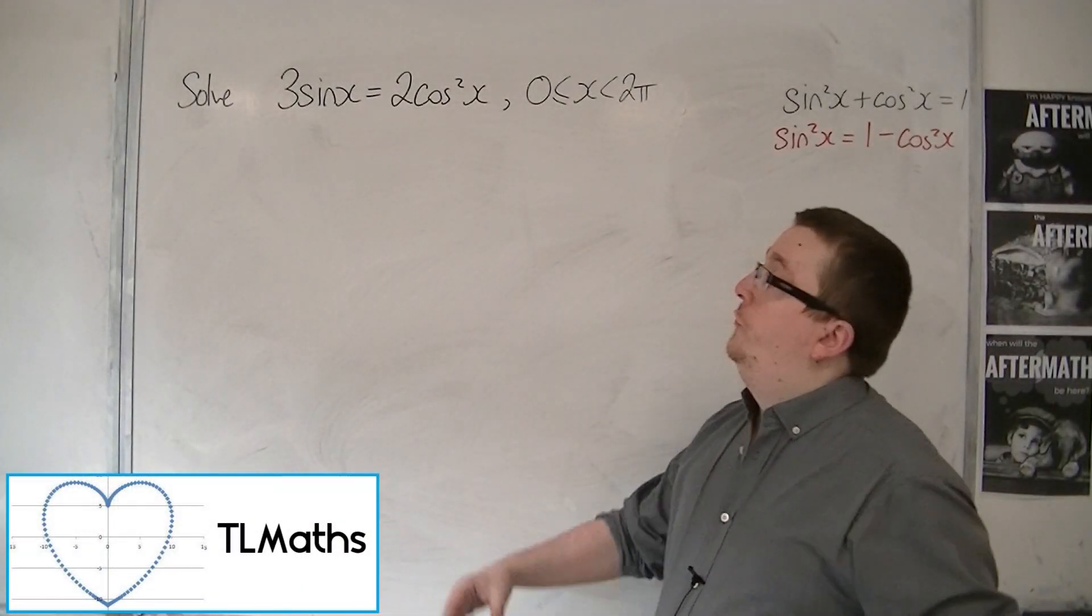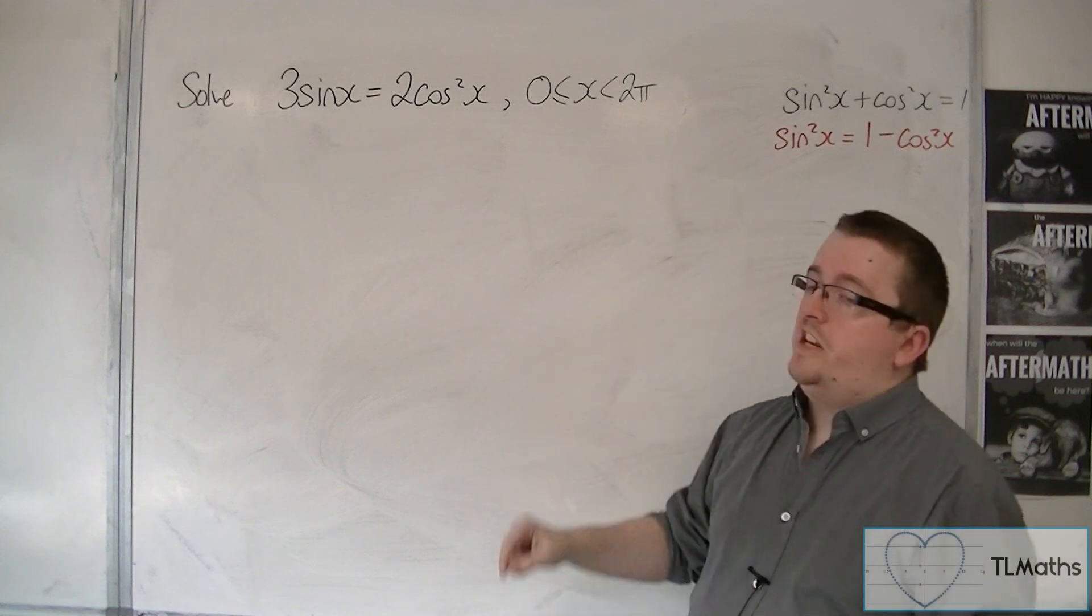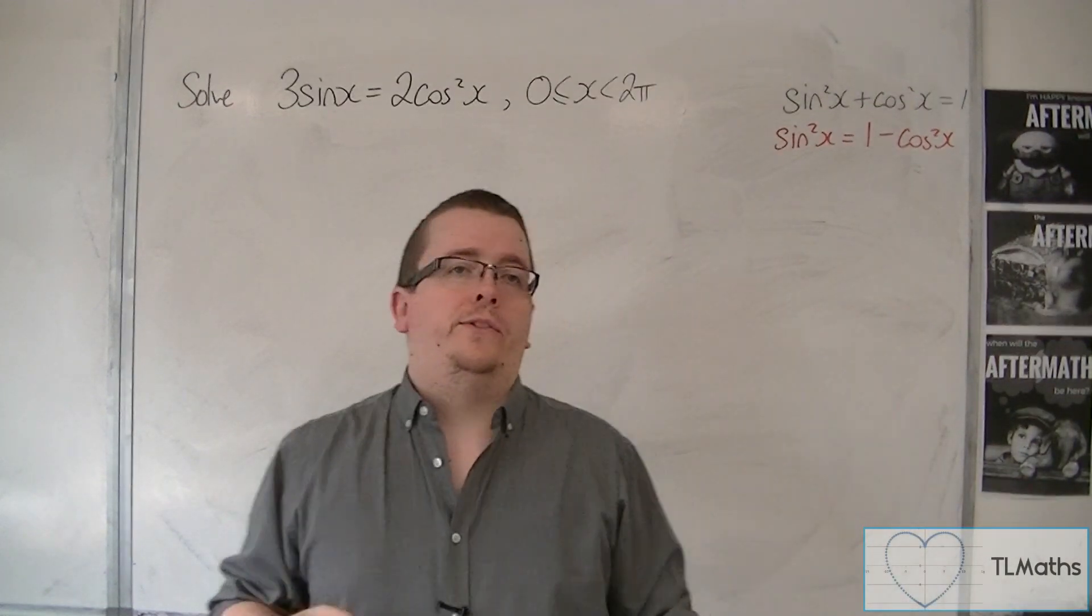In this video, we're going to be solving 3 sine x equals 2 cos squared x between 0 and 2 pi radians.